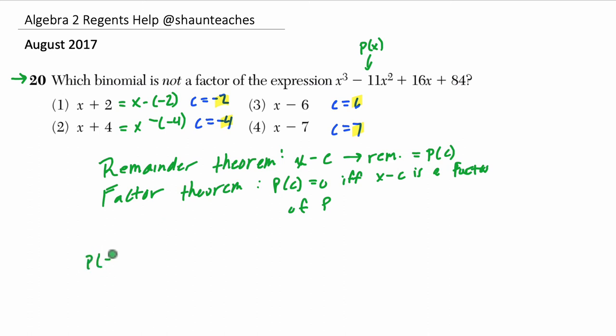So p of negative 2 is going to equal negative 2 cubed, that's negative 8, minus 11 times negative 2 squared, so that's 11 times 4, so 44, plus 16 times negative 2, so minus 32, and then plus 84. And we should see, if this is 0, then it's a factor.